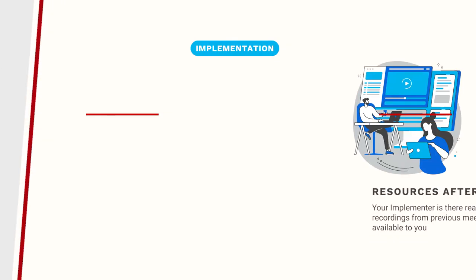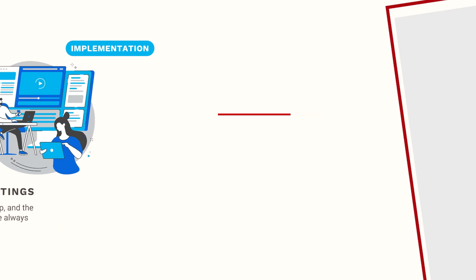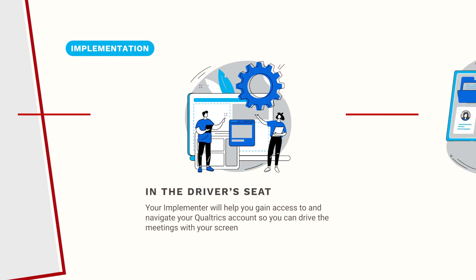Between working sessions, your implementer is only an email or phone call away if questions come up. And of course, you can watch recordings of previous sessions to recall details, requests, and tasks. Unless you request otherwise, your implementer will be a temporary brand admin on your Qualtrics account with direct ability to edit and build. In the first week after the kickoff call, we will help you navigate and become familiar as an admin on your Qualtrics account as well.